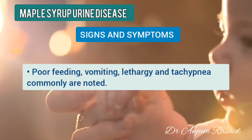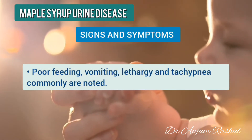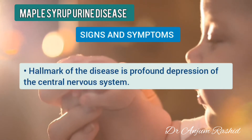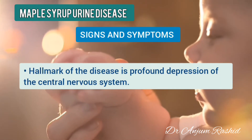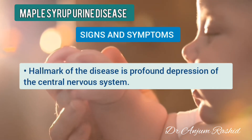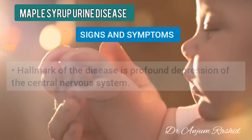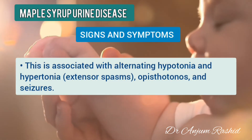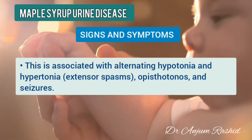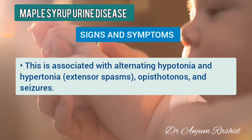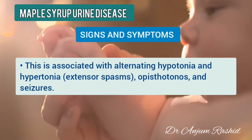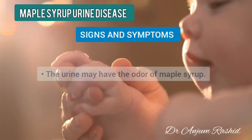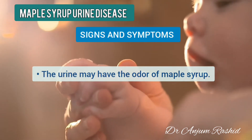Poor feeding, vomiting, lethargy, and tachypnea are commonly noted. However, the hallmark of the disease is profound depression of the central nervous system, associated with alternating hypotonia and hypertonia, i.e. extensor spasm, opistotonous, and seizures. The urine may have the odor of maple syrup.